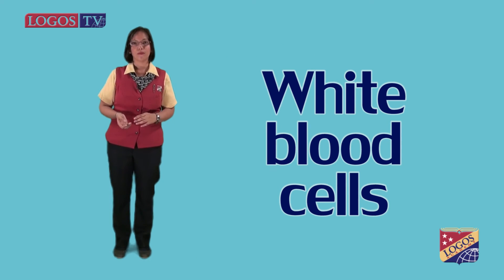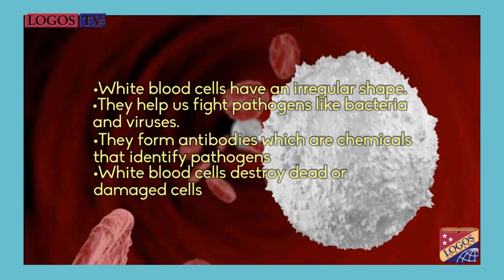White blood cells have an irregular shape. They help us fight pathogens like bacteria and viruses. They form antibodies, which are chemicals that identify pathogens. White blood cells also destroy dead or damaged cells.